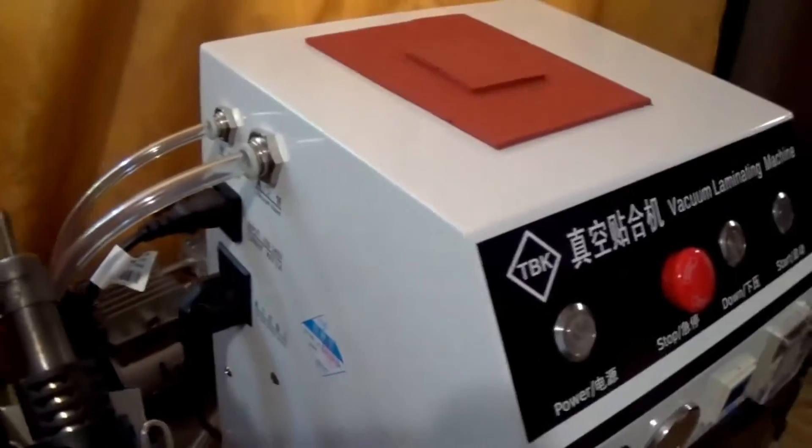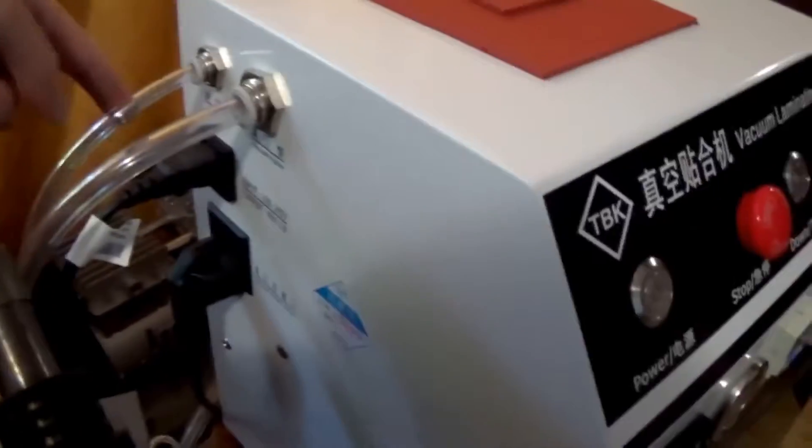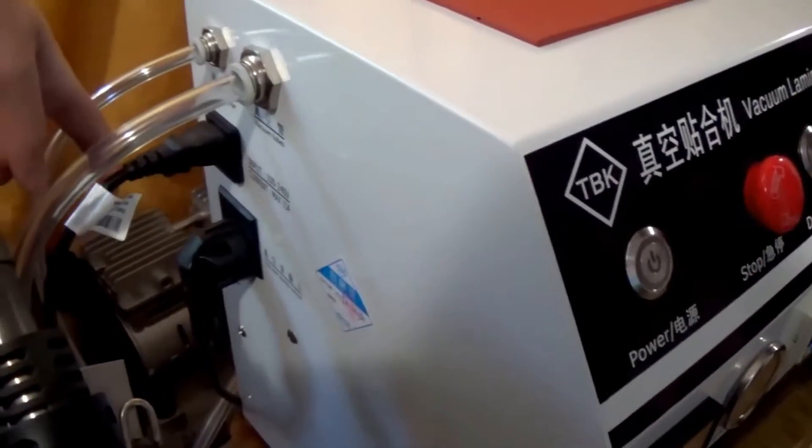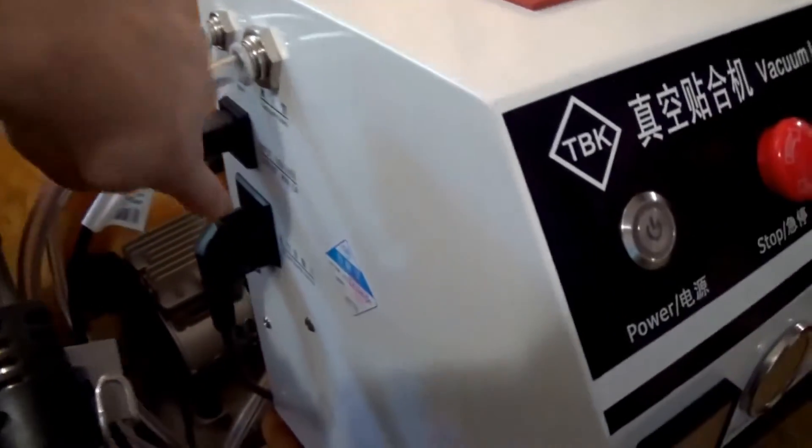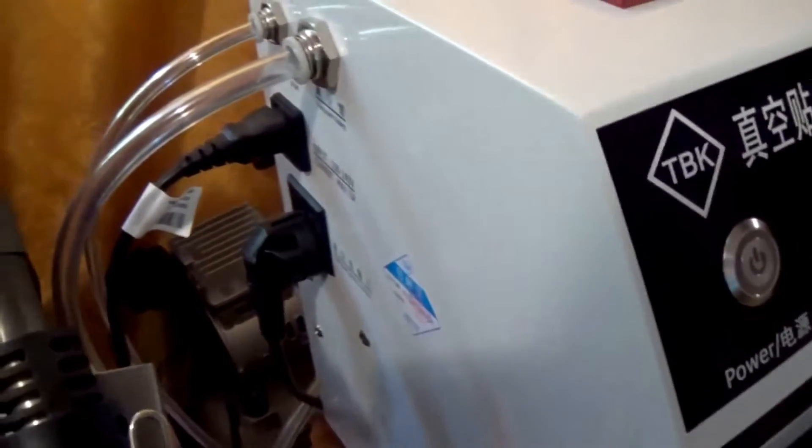Here you can see several connectors. A tin pipe is a compressor pipe, that one is the pipe of a vacuum pump, the power cord and outlet for the vacuum pump connection.